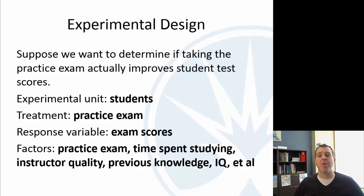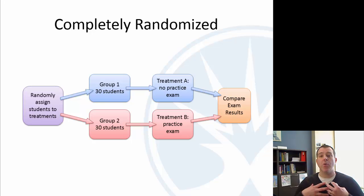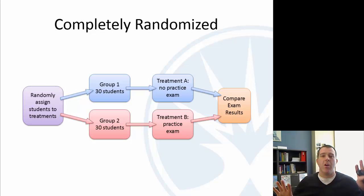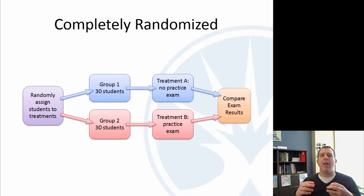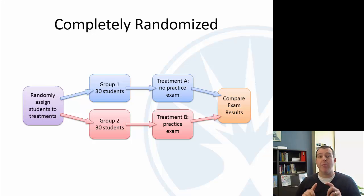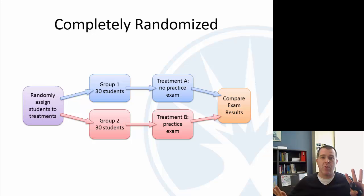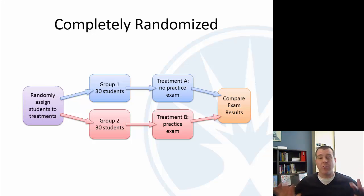Let's look at three different experimental designs. A completely randomized design is when we take a group — say 60 volunteers — and randomly split them up: 30 students in one group, 30 in another. The first group doesn't take the practice exam, the second group does, and then we compare their exam results. Some students say you can't have valid results because you might have smarter students in one group or the other — that's why we randomize. If you randomly assign students to the two groups, the assumption is that students who've had statistics before, brand new students, students who study hard, and students who don't are all randomly split between the two.